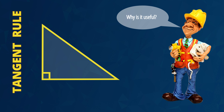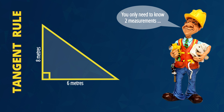G'day. Designing motorcycle jumps like this uses the mathematics of trigonometry. The tangent rule is the easiest and the most useful of the three trigonometry rules. Today we'll learn three methods to use the tangent rule and great tricks to remember them.